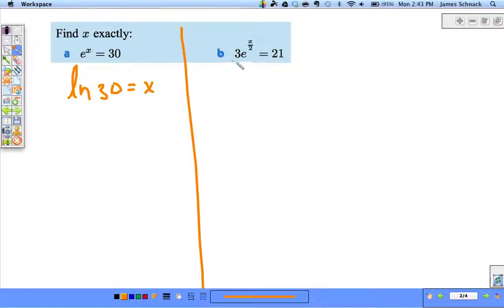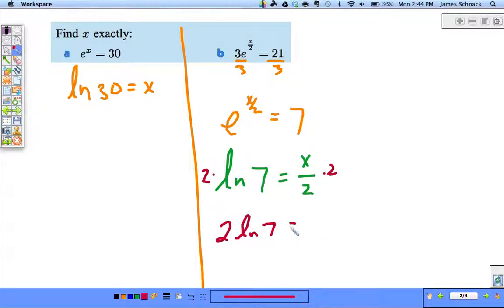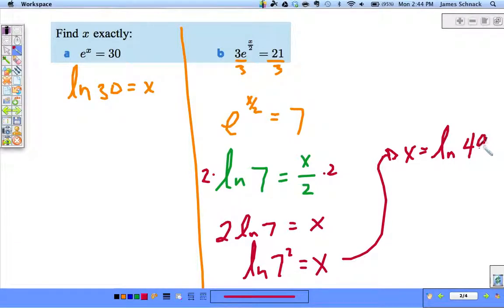We want to get the power by itself, so divide both sides by 3. Now let's change it to logarithmic form. Natural log of 7 equals the exponent. Is x alone yet? No. Multiply both sides by 2. So 2 times natural log of 7 equals x. But we can do better—this 2 can become an exponent. Natural log of 7 squared equals x.